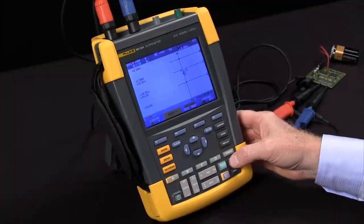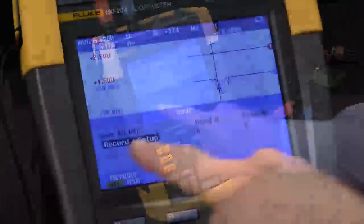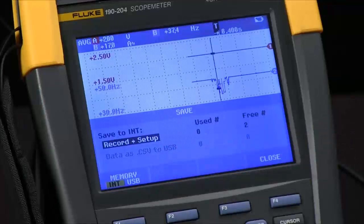If I want to save, I hit the save button, F1 to save, and I can record and save up to two recordings and setups for the trend plot.